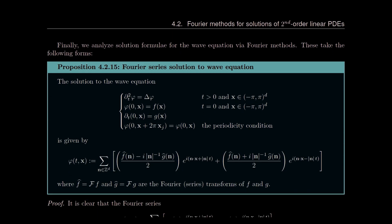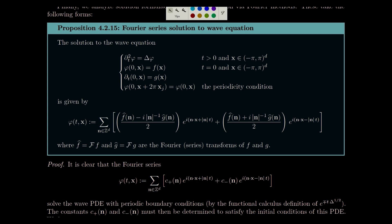We do the exact same thing with the wave equation, but we have to be careful: because there are two time derivatives, we can't get away with just one initial condition. We need both an initial shape of the wave and an initial wave velocity. Make sure you look for both of those terms — the propagation of a wave depends on both its initial shape and initial velocity.